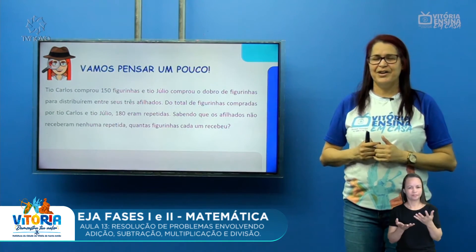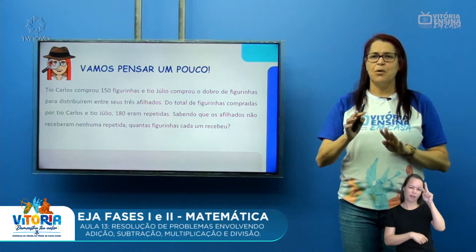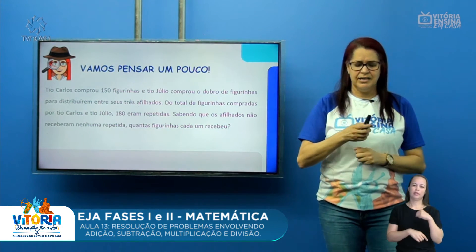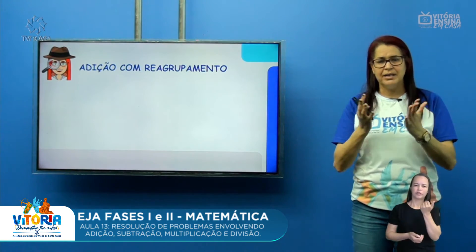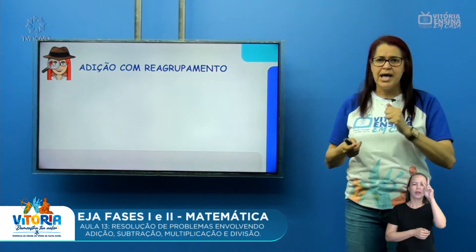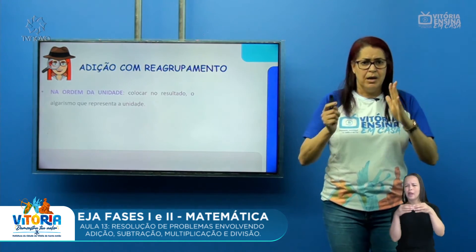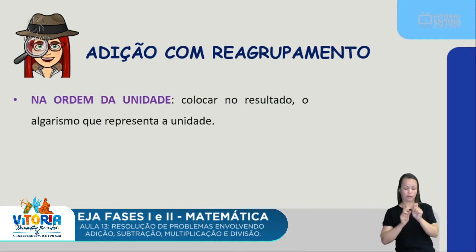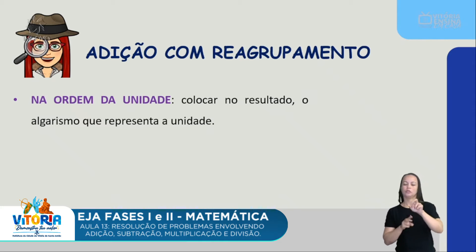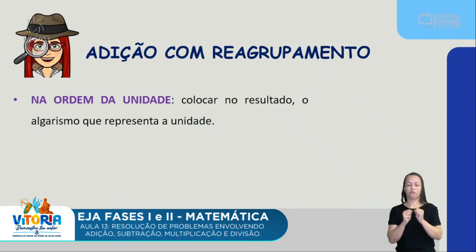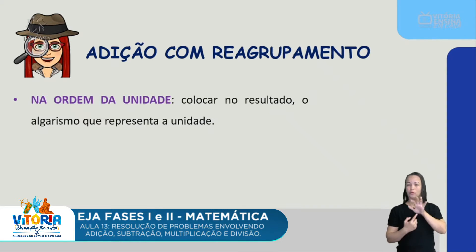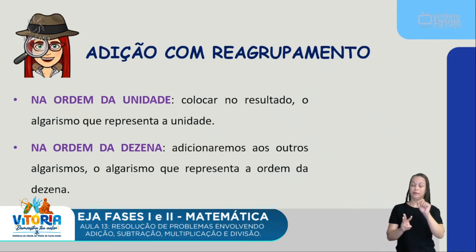Antes de resolver, eu preciso relembrar algumas operações. Vou retomar a adição com reagrupamento. Na adição com reagrupamento, eu preciso analisar a ordem das unidades. Toda vez que eu adicionar um número e, na ordem das unidades, essa representação ficar maior do que 9 — 10, 11 — eu não vou colocar o resultado todo na ordem das unidades. A gente vai colocar no resultado o algarismo que representa a unidade, e na dezena eu vou adicionar o algarismo que representa a ordem da dezena.